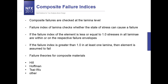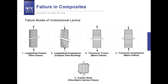Failure indices are related to failure theories, and in the analysis we have Hill, Hoffman, Tsai-Wu, and other definitions. On the next slide are the failure modes presented for the unidirectional lamina: failure according to longitudinal tension (fiber failure), longitudinal compression, transverse tension (matrix failure), and in-plane shear. It is important to note that the previously mentioned failure indices represent only a phenomenological failure criterion not related to the mode of failure.